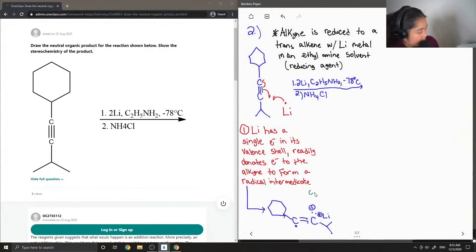And then I'll just draw our ethyl amine up here. And this negatively charged carbon will come and deprotonate the amine. Give us another intermediate.